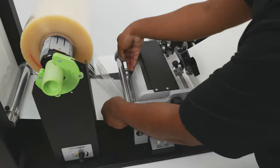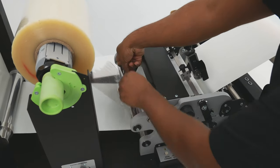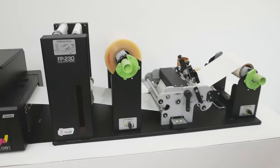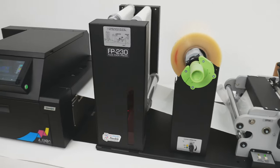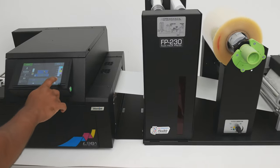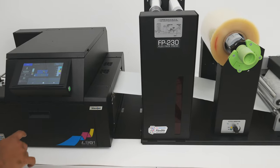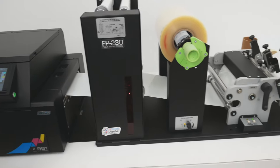Laminate is passed under the roller bar and affixed to the media. Don't worry about wrinkles or anything at this stage. We'll use the touch screen to advance the media a bit to smooth out our lamination. The FP230 will automatically begin to rewind as slack is created in the paper path.